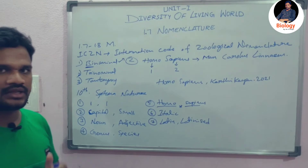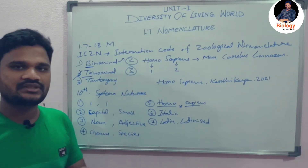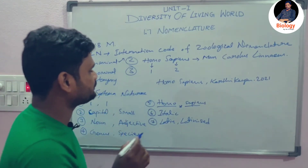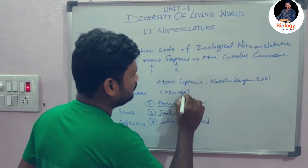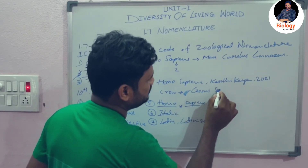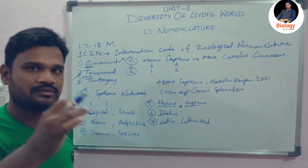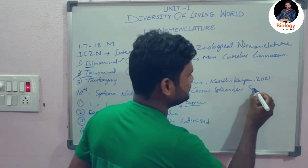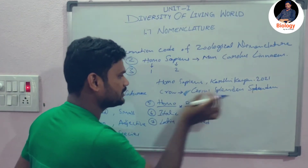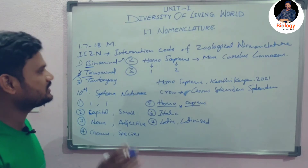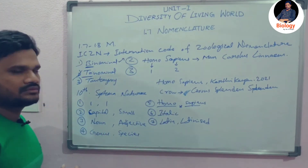Now let's see the second type — trinomial nomenclature. 'Tri' means three, which means the name of an organism should contain three words. For example, the scientific name of the crow in India and Pakistan is Corvus splendens splendens — it has a three-worded name. That type of nomenclature is called trinomial nomenclature. The same rules which are applied for binomial nomenclature also apply to trinomial nomenclature.